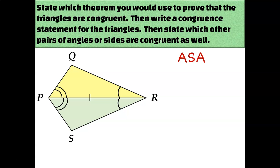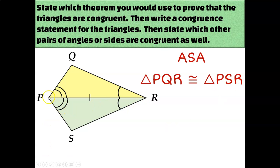Remember that to write a congruence statement, you can call the first triangle whatever you want, but the vertices of the second triangle's name have to go in the same corresponding order. So if I call the first triangle — the yellow triangle on top — triangle PQR, I would have to call the green triangle on the bottom triangle PSR. If I call the first one PQR, that's two markings on an angle, no markings on an angle, then one marking on an angle — so I go in the same order: two markings, no markings, one marking — that would be PSR.